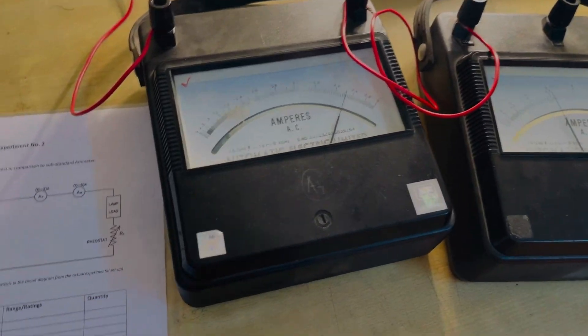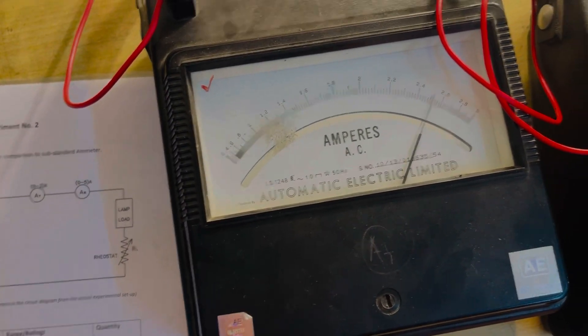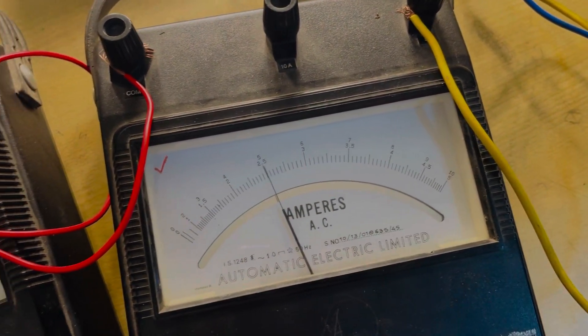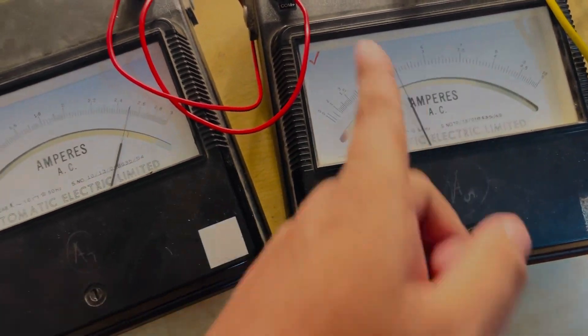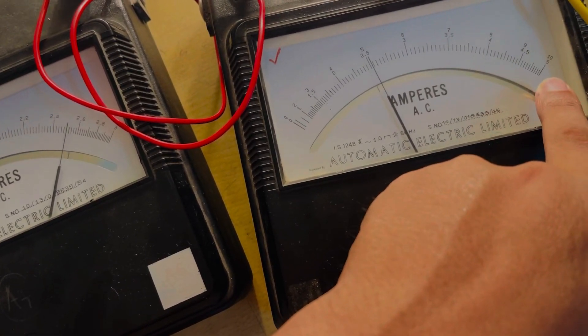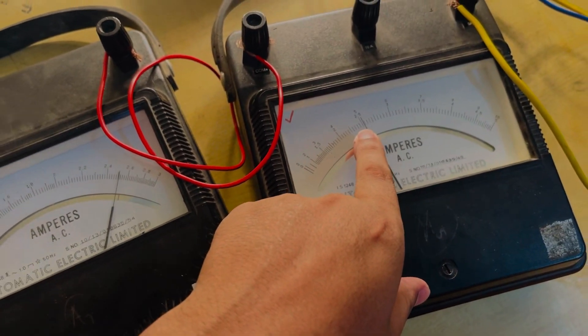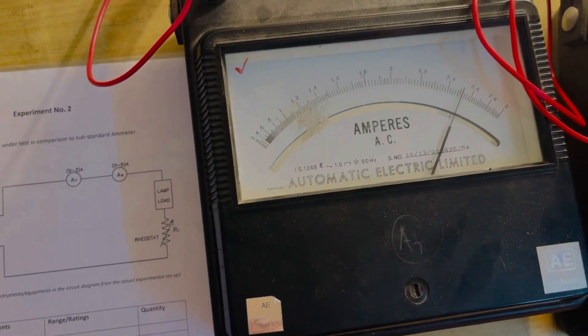This is the last value - 2.51 on one meter and 2.5 on the other. We're using the 0 to 5 amp scale, so we take the lower division. This is 2.5 and this is 2.51. Now we take different values.